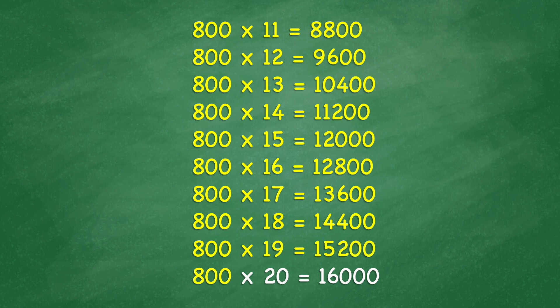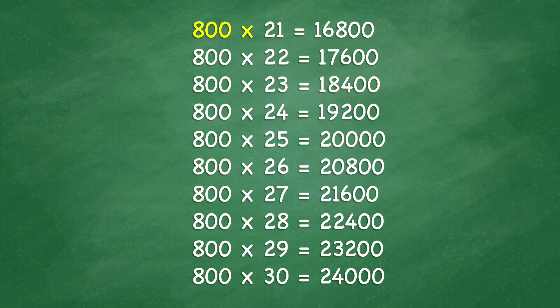800 times 20 equals 16,000. 800 times 21 equals 16,800. 800 times 22 equals 17,600.